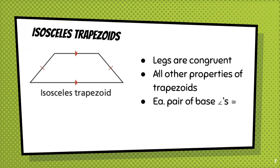Each pair of base angles is congruent. So this pair of base angles are congruent and this pair of base angles are congruent. Diagonals are also congruent to each other.